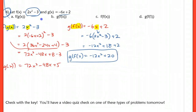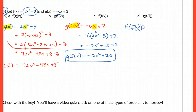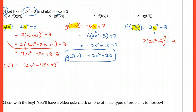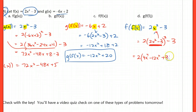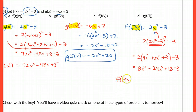For f of f of x, take f of x, which is 2x squared minus 3, and substitute f of x in for x — using it again as its own input. So I have 2 times (2x squared minus 3) squared minus 3. After FOILing: 2 times (4x to the fourth minus 12x squared plus 9) minus 3. Distributing and simplifying: f of f of x is equal to 8x to the fourth minus 24x squared plus 15.